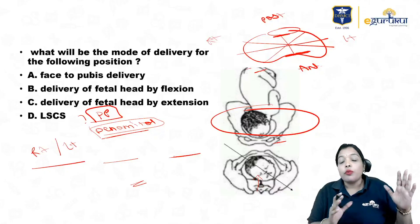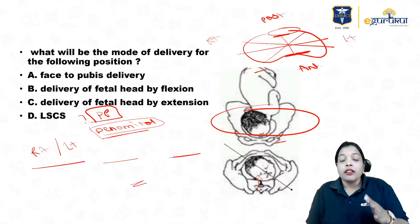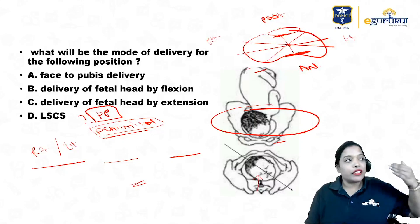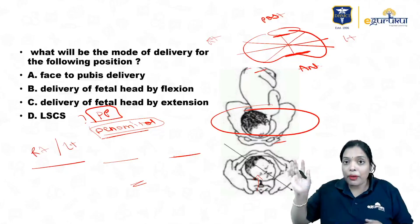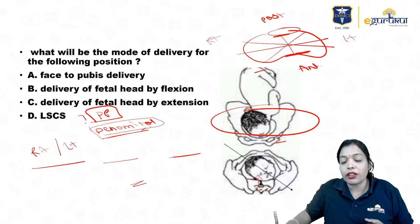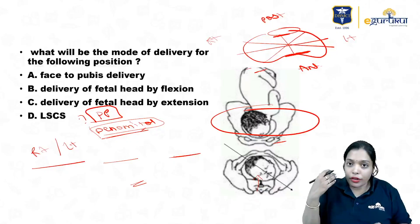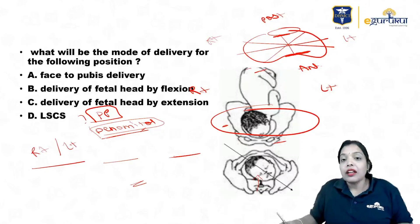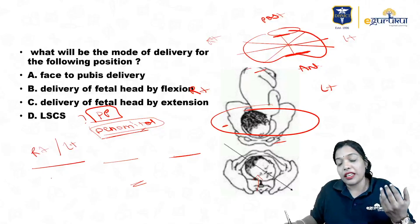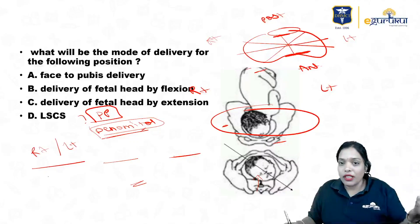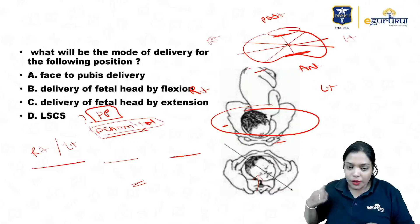First ask yourself what is the presenting part. Once you know the presenting part you will know the denominator. After you identify the denominator, check whether it is on the right side or the left side. Remember: my right and the screen right will be the patient's left, because the patient lies opposite to me. So the right side of the patient is on the screen's left, and vice versa. Then ask yourself whether the denominator is seen towards the pubic symphysis or the sacral promontory, and depending on that you give the names anterior or posterior.